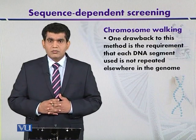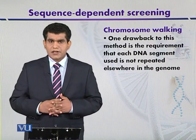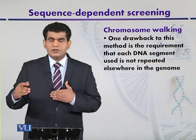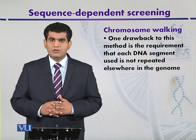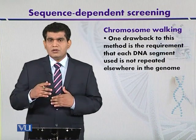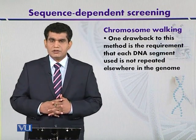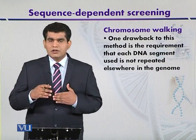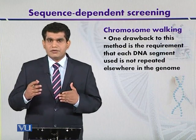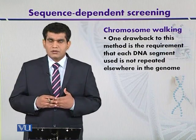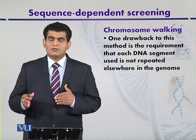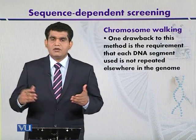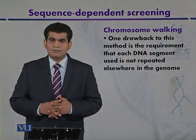One drawback of chromosome walking is that repetitive DNA must not be present elsewhere in the genome, because if repetitive DNA is present the detection may be confusing. This technique of chromosome walking has been extensively used for the detection of different genes in Drosophila, because in Drosophila the repetitive DNA segments are not as prevalent when compared with higher organisms.